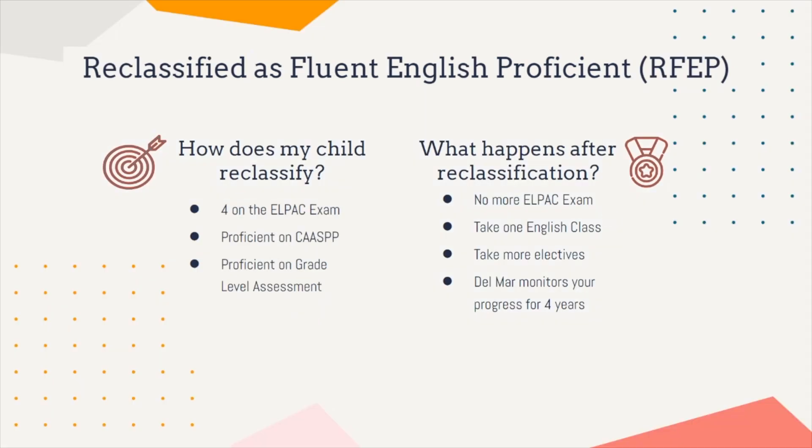No matter what level students start in, our goal is to support students so that they can reclassify as fluent and proficient in English, or RFEP. To reclassify, students must fulfill several requirements: first, score a 4 on the ELPAC exam; second, show proficiency on the CAASPP Smarter Balanced Assessment or a school site-based or district-based assessment; and finally, English teachers and parents are consulted before reclassification. Once reclassification is complete, your student will not take the ELPAC exam again, will not take an ELD class, and will instead be able to take more electives. We will monitor their progress during high school.